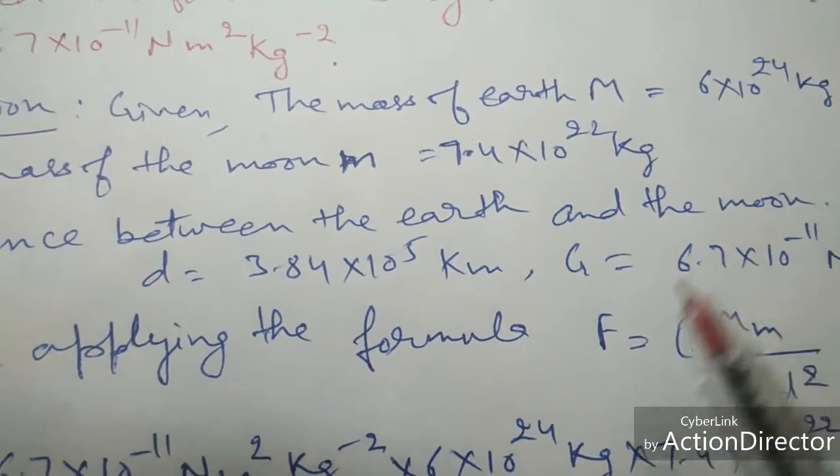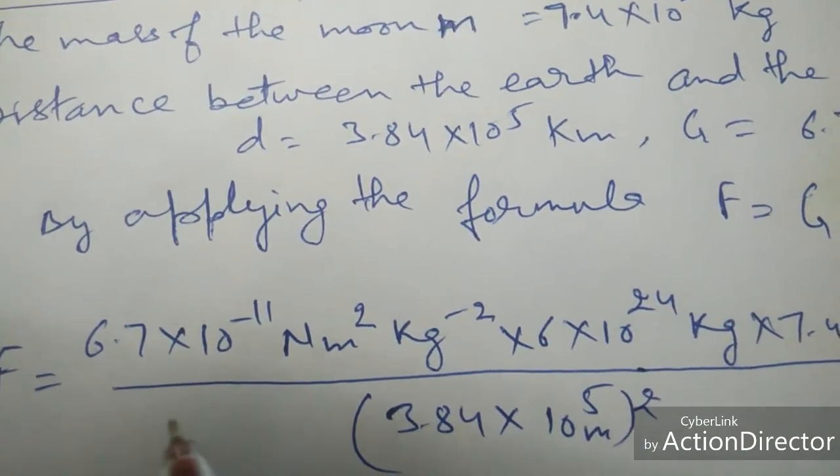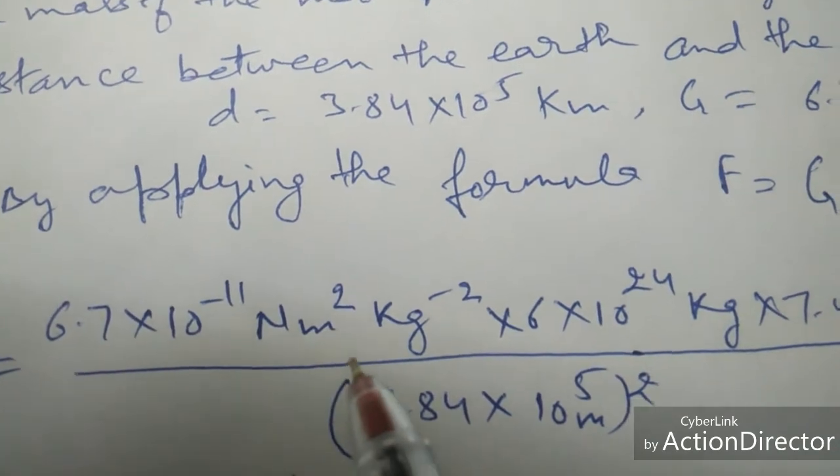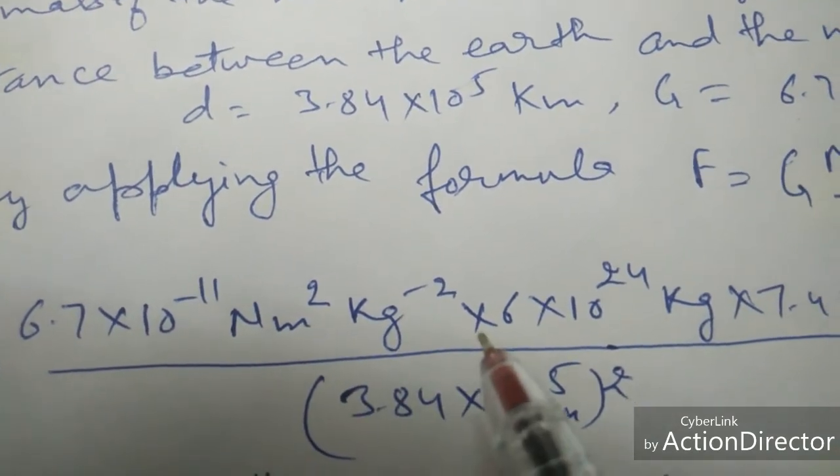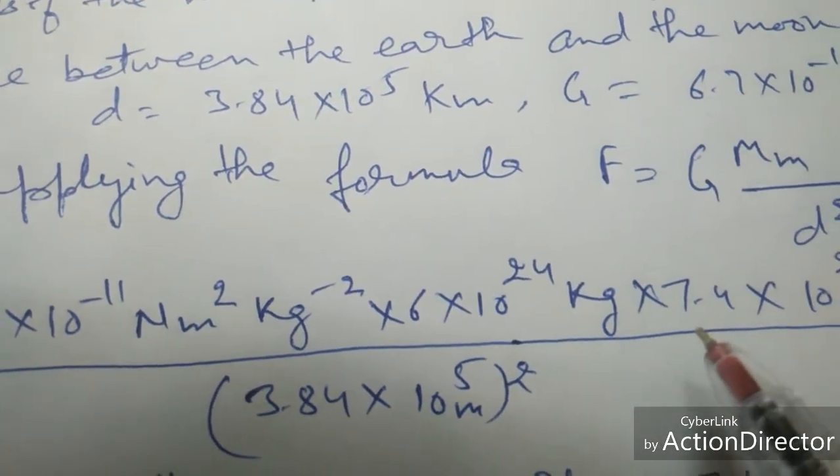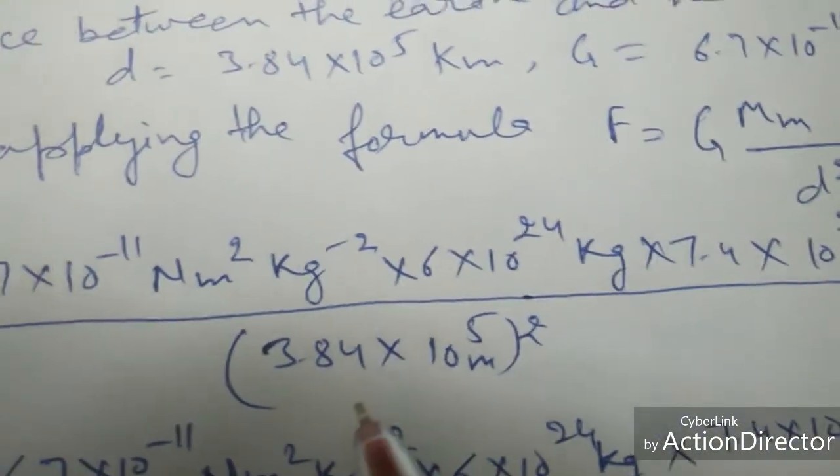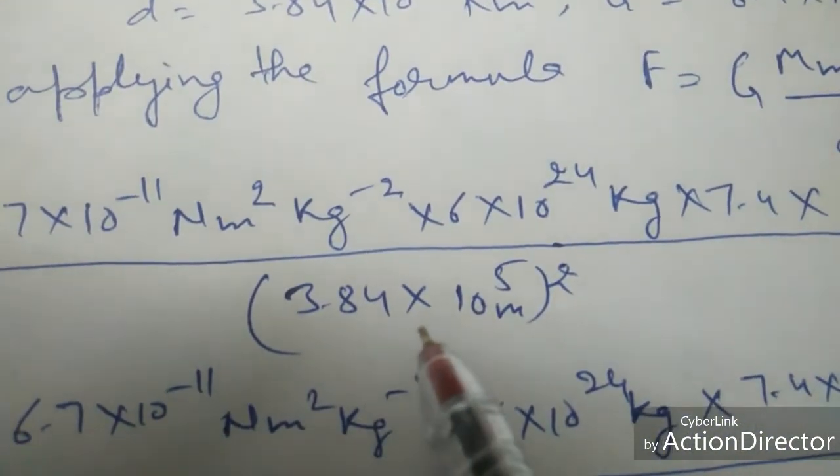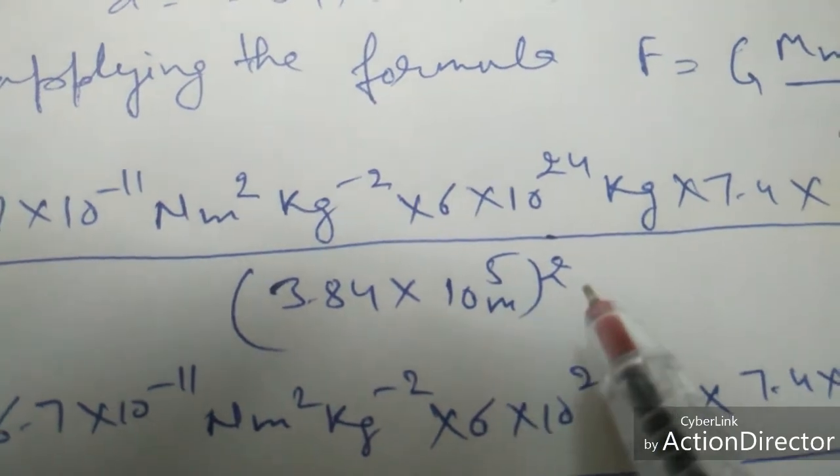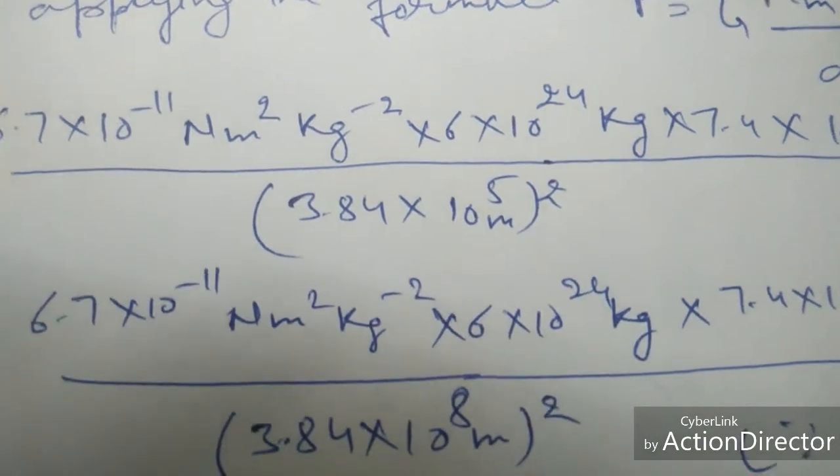And putting all the values in this equation, we will put all the values, that is 6.7 × 10⁻¹¹ Nm² per kg². Now we will calculate step by step.